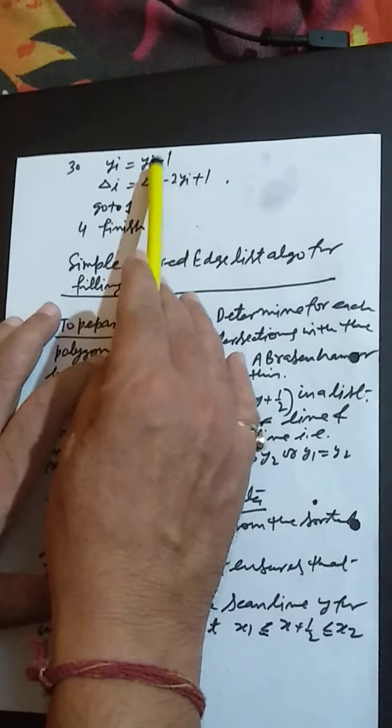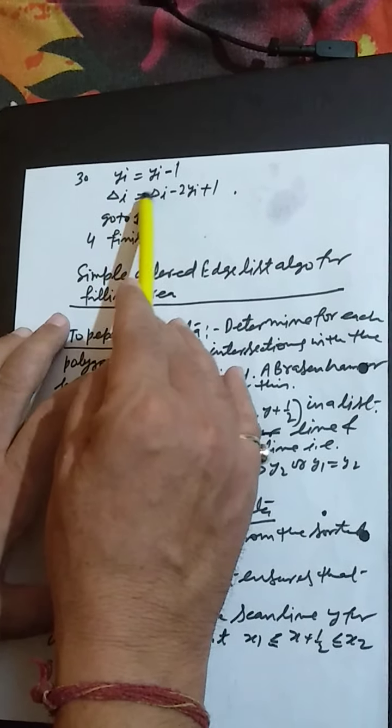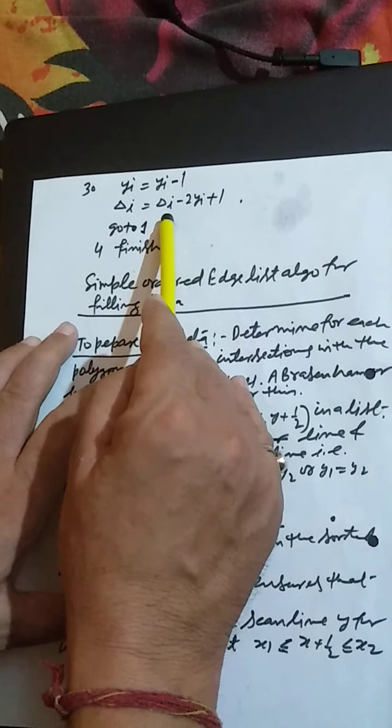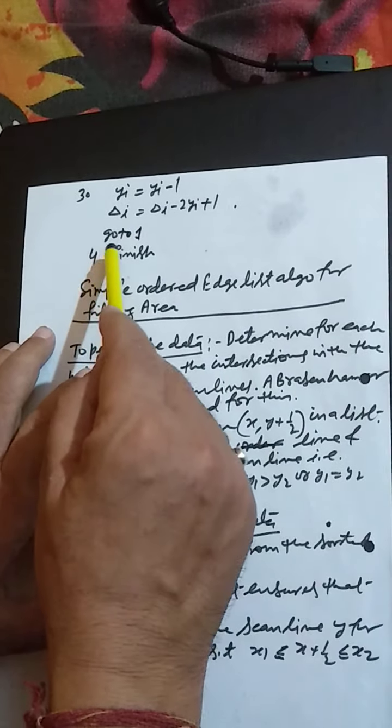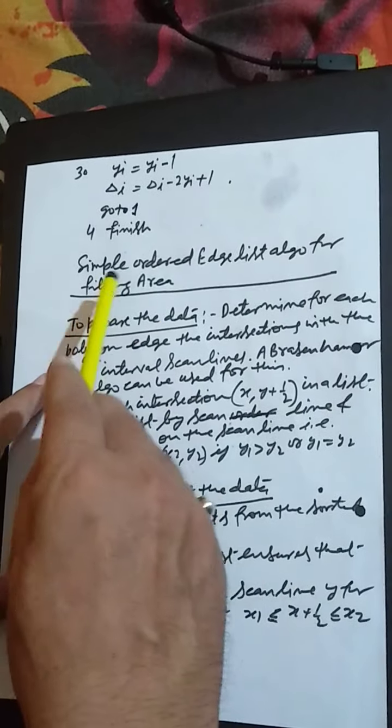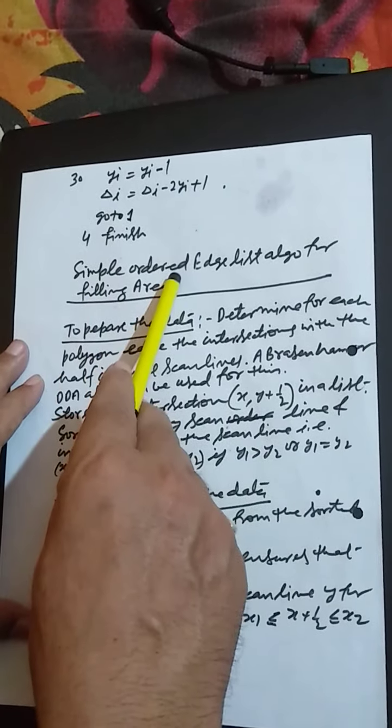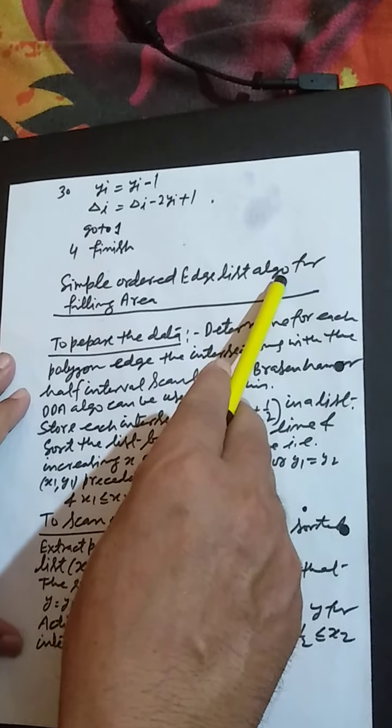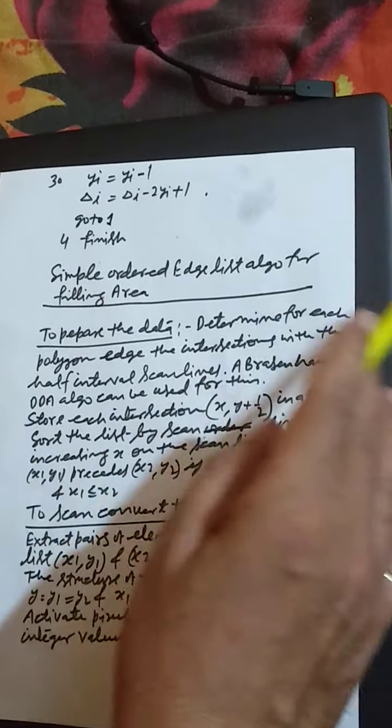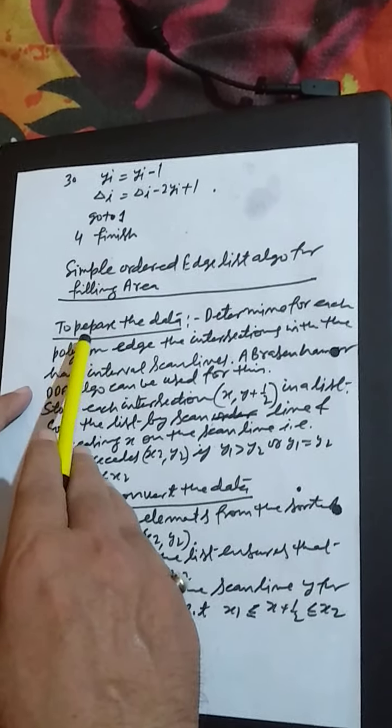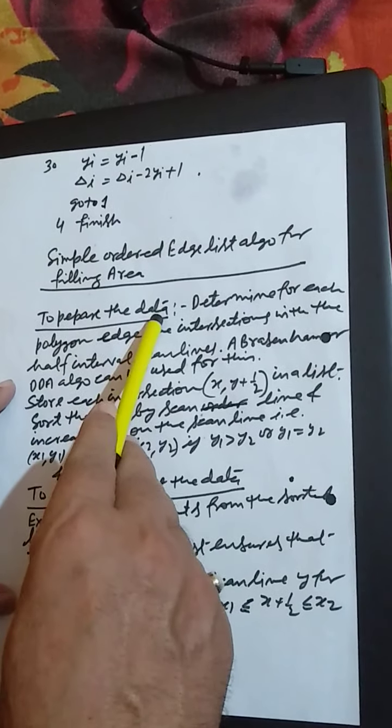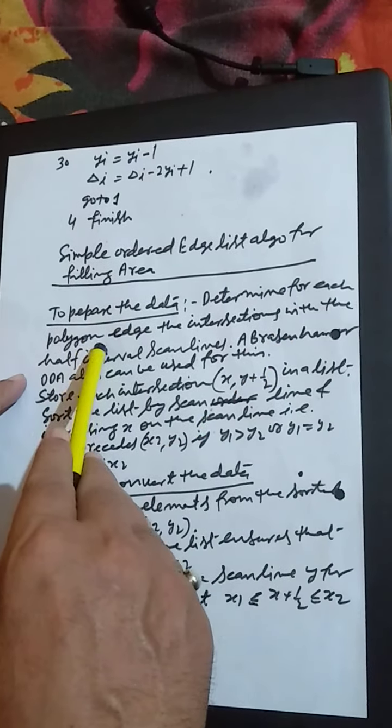On level 30, yi is equal to yi minus 1, delta i is equal to delta i minus 2yi plus 1, go to 1. At level 4, this is finished. The next algorithm is Simple Ordered Edge List Algorithm for filling area.